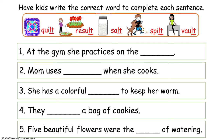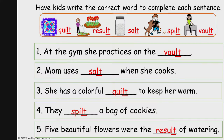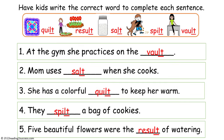Now have kids write the correct word to complete each sentence. Their choices are quilt, result, salt, spilt, and vault. This is the completed example.